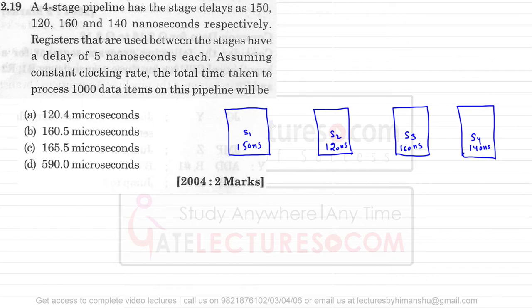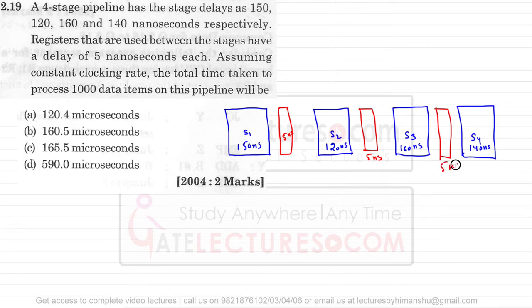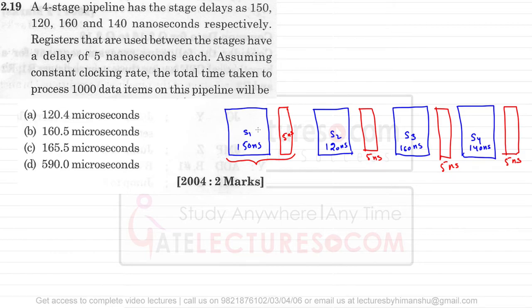That buffer has a delay of 5 nanoseconds each — not 50, it is 5 nanoseconds. So there is a buffer of 5 ns after S1, a buffer of 5 ns after S2, a buffer of 5 ns after S3, and another buffer of 5 ns after S4. We have to execute 1000 data items on this pipeline. When buffers are present, every stage includes the buffer delay time as well as the stage time.